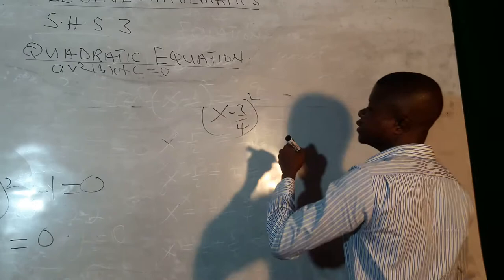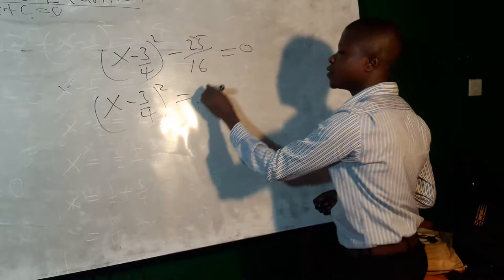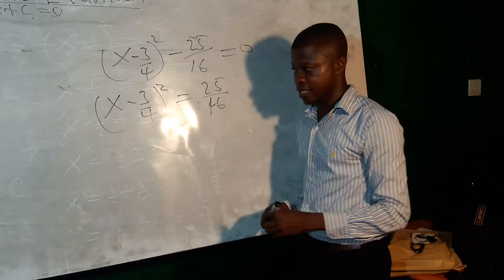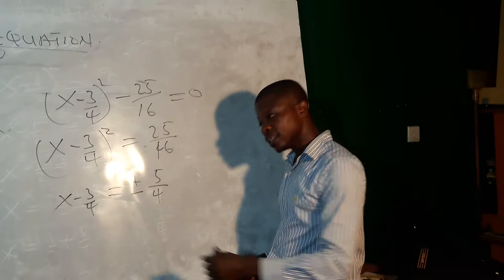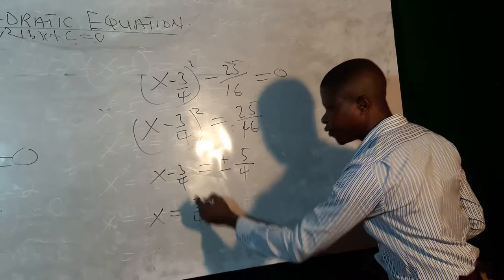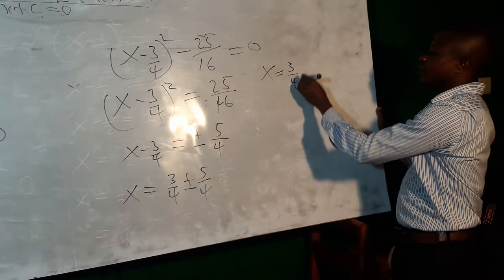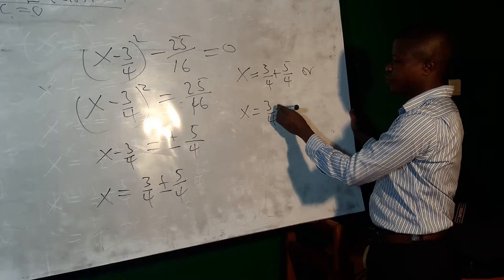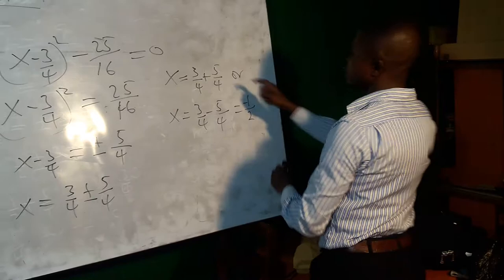So we have x minus 3 over 4, all squared, minus 25 over 16 equals 0. Grouping gives us x minus 3 over 4 squared equals 25 over 16. Taking the square root of both sides, x minus 3 over 4 equals plus or minus 5 over 4. Therefore x equals 3 over 4 plus or minus 5 over 4. Separating the roots: x equals 3 over 4 plus 5 over 4, which is 8 over 4, giving x equals 2; and x equals 3 over 4 minus 5 over 4, which is negative 2 over 4, giving x equals negative one half.